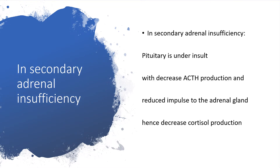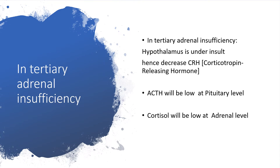In secondary adrenal insufficiency, the pituitary is underactive, which decreases ACTH production and reduces the impulse to the adrenal gland, hence decreased cortisol production. In tertiary adrenal insufficiency, the hypothalamus is underactive, so there will be low levels of CRH — corticotropin-releasing hormone. That will reduce ACTH at the level of the pituitary gland and, subsequently, low cortisol at the level of the adrenal gland.